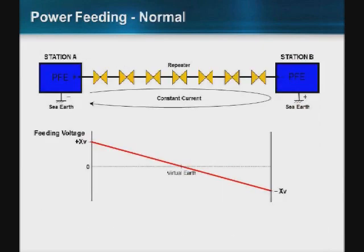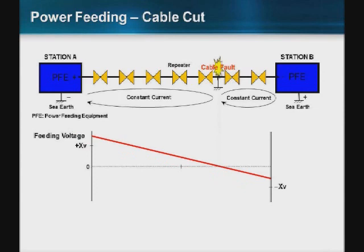This is a diagram of power feeding in normal condition. You have power feed equipment at both ends of the cable at the cable stations — one with a positive, one with a negative voltage differential — supplying a constant current and constant voltage drop across each repeater, with a virtual earth at the center of the system. In a cable cut or fault, the power conduit becomes exposed to seawater and creates a grounding point. The PFE has to recorrect to maintain constant current on both ends and maintain a constant voltage drop across each repeater — first to protect repeaters from too-high voltage levels, and second, in the case of a shunt fault, to maintain service on the surviving fiber pair that's unaffected.